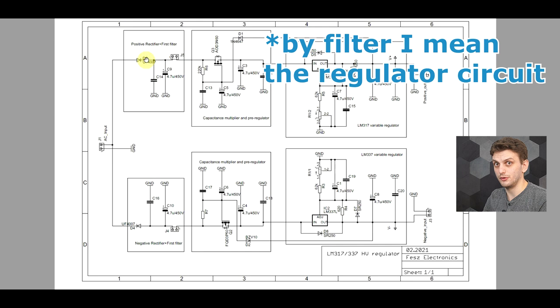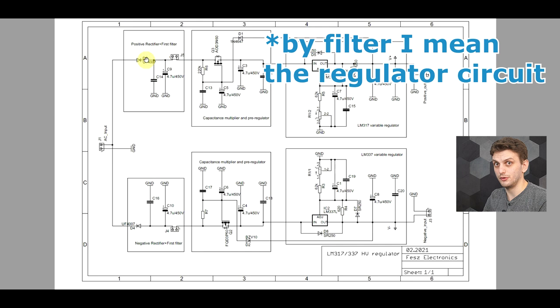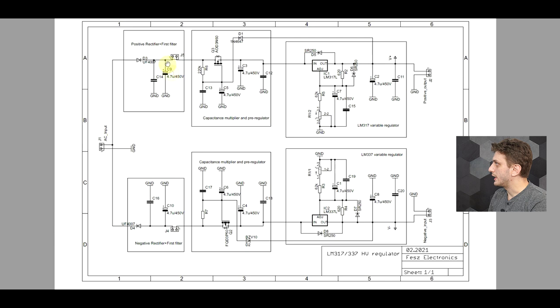I'm using 4.7 microfarad capacitors all over. We have one right after the diode, one in the capacitance multiplier, one after the capacitance multiplier, one in the adjustment of the LM317, and one on the output. And of course the same thing on the negative version. I also added this double potentiometer so we can vary the output voltage.